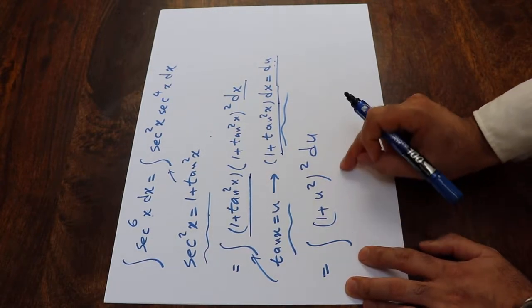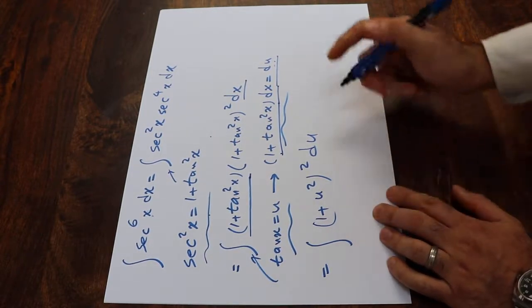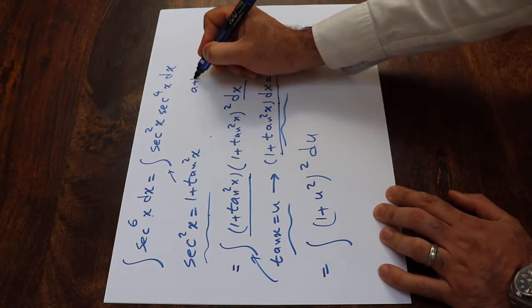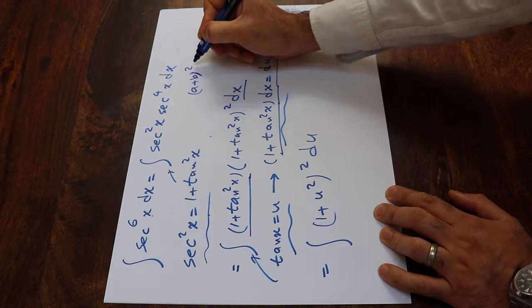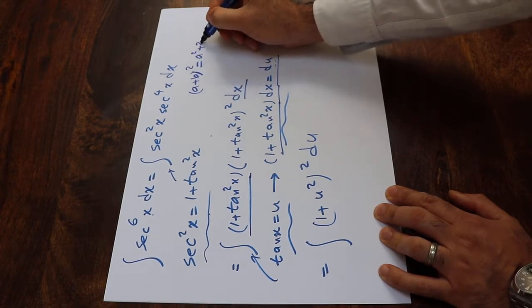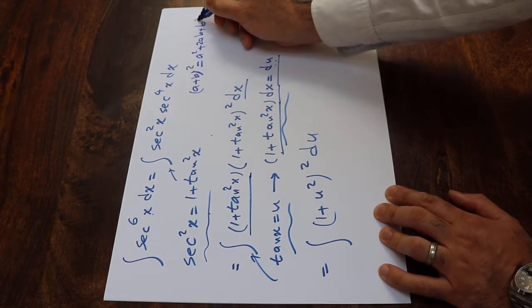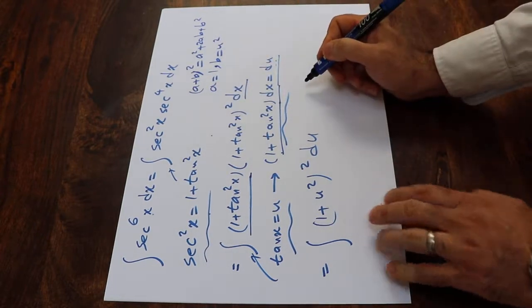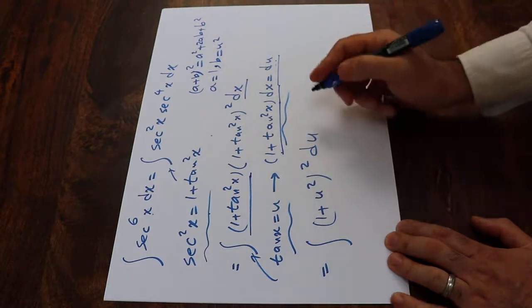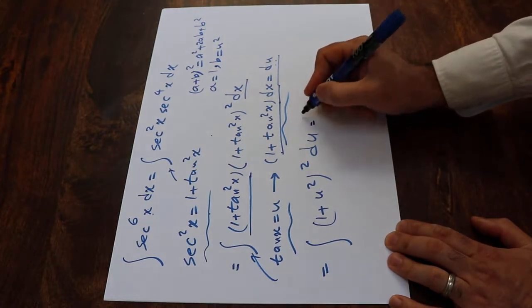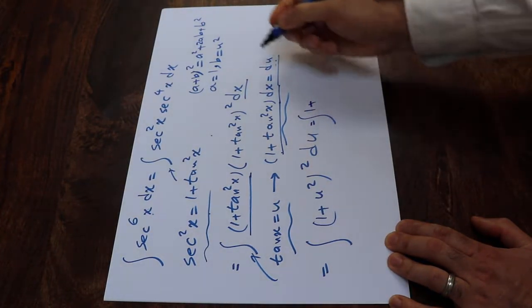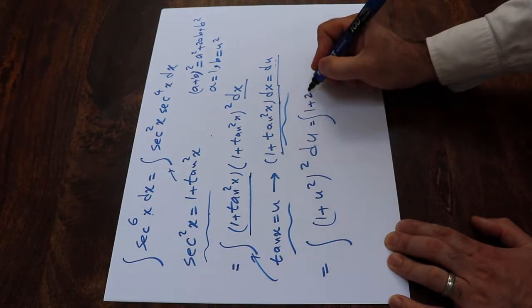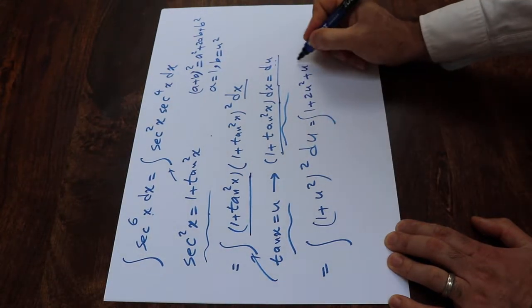To solve this integral, you need to expand this expression. From algebra, we know that (a+b)² is equal to a² plus 2ab plus b². Here, a is basically equal to 1 and b is equal to u². So if you substitute that into this equation, you can rewrite this integral as integral of 1 plus 2ab, that is 2 times 1 times u², that will be 2u², plus b², which will be u^4.